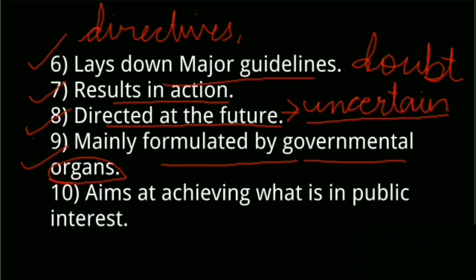The last characteristic is that there is involvement of various bodies and agencies — for example, industrial workers, intellectuals, voters, bureaucrats, legislatures, political executives, political parties, the judiciary, and many more. These are the various organs that participate in public policy making and can influence the policy process to a great extent.